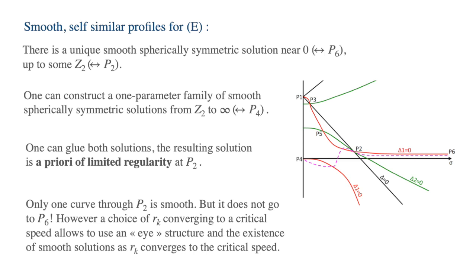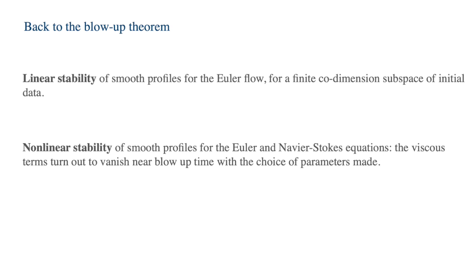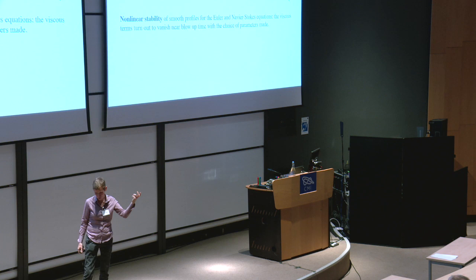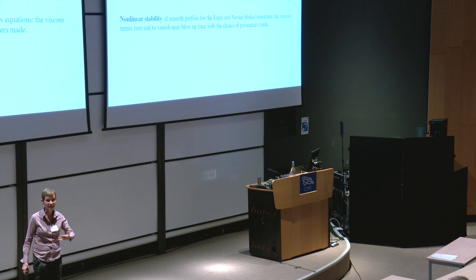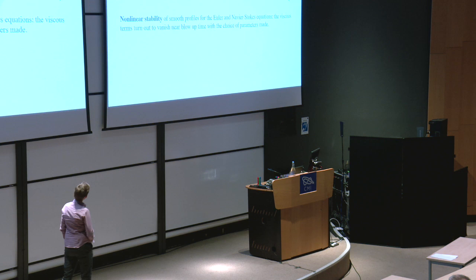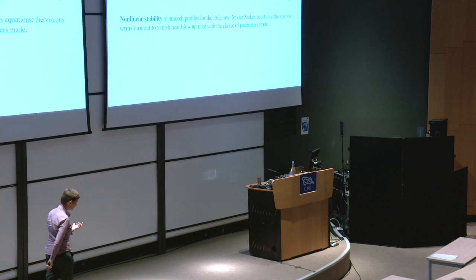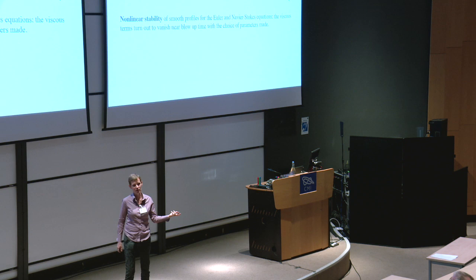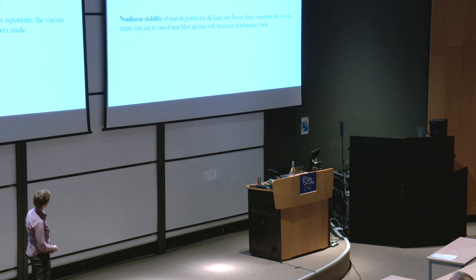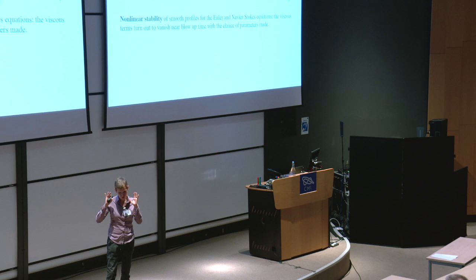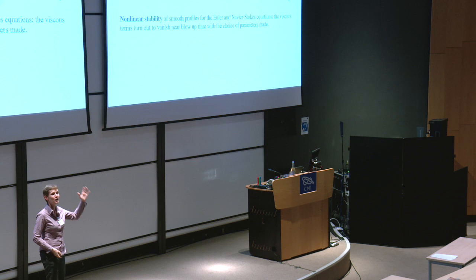Given those C-infinity profiles — self-similar solutions blowing up at time T, spherically symmetric — you write your solution as those profiles plus a remainder term. First you must understand the linear stability of those blow-up profiles by linearizing the equation around them — and you need them to be C-infinity for that. Then you must understand nonlinear stability. You also need to understand what the viscous terms do; strangely enough, the viscosity is almost like a perturbation in the problem — which is why they can treat Euler and Navier-Stokes simultaneously.